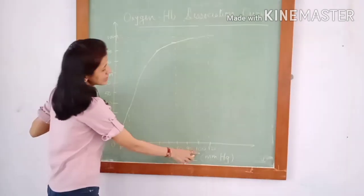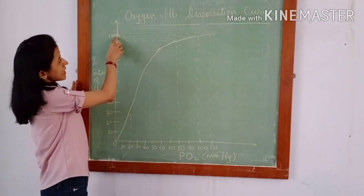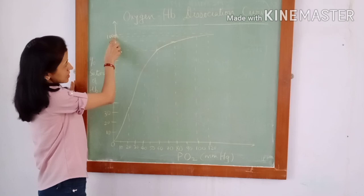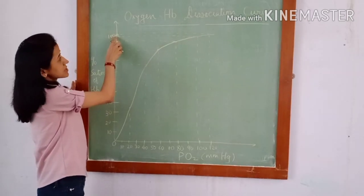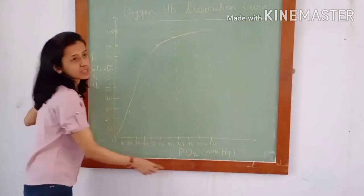At 110 mmHg partial pressure of oxygen, the percentage saturation is 97.5%. Percentage saturation becomes 100% when partial pressure of oxygen is 120 mmHg.